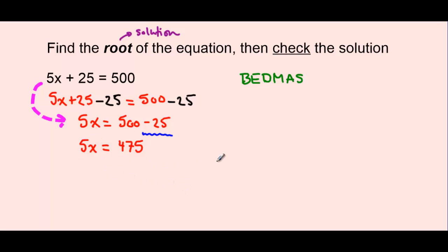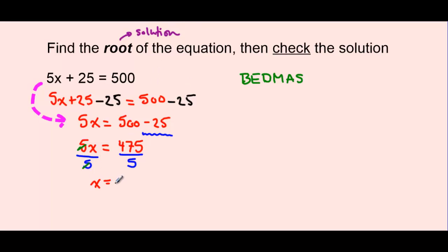Now we have 5 multiplied by x. So the opposite operation here is to divide by 5, and remembering we need to do the same thing on both sides. Both 5's will cancel with each other, leaving us with just x on the left-hand side. And 475 divided by 5 is 95.